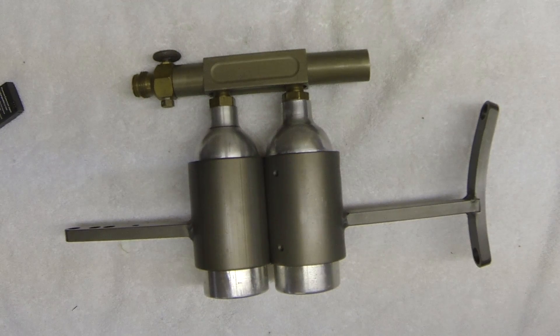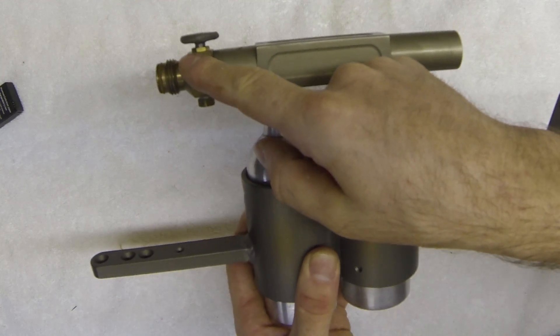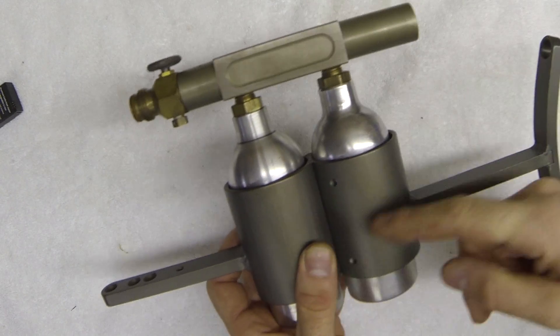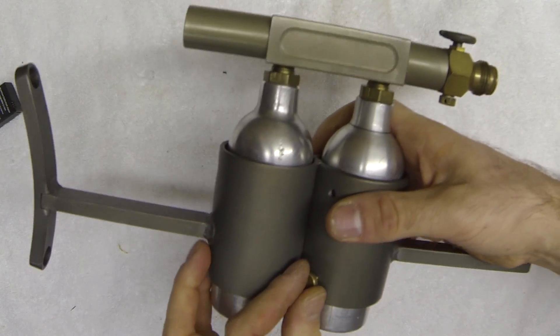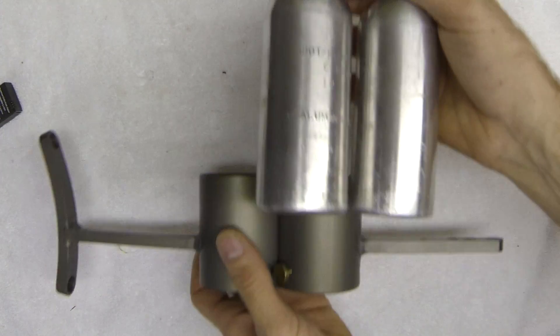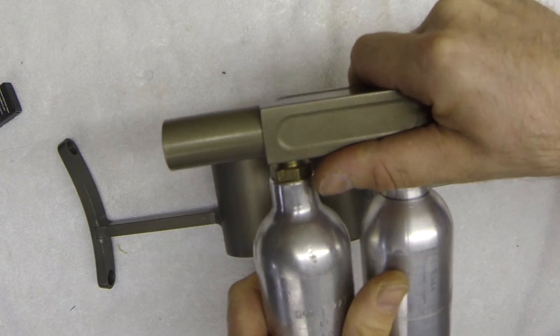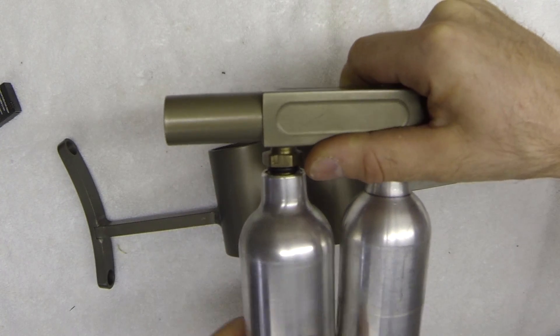Here's a Lapco dual tank stock. We can see the ASA on the stock with an on-off, and then we have a cage that holds the two tanks in it. Here's our mount screw or Allen screw to lock the two tanks in the stock, and we can see that each of the tanks has a siphon tube in it.